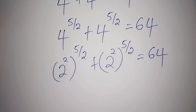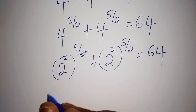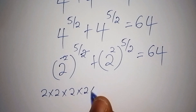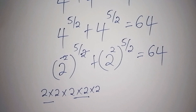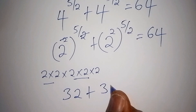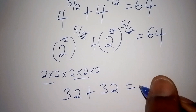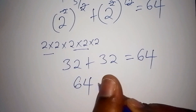The 2 in the exponent cancels with the 2 in the denominator, leaving 2 to the power of 5. Now 2 to the power of 5 equals 2 times 2 times 2 times 2 times 2. Regrouping: 2 times 2 is 4, times 4 is 16, times 2 is 32. So each term gives 32, and 32 plus 32 is 64, which equals 64. Our answer is verified and correct.